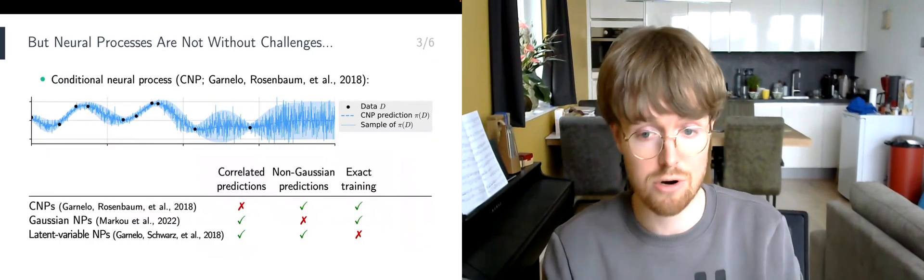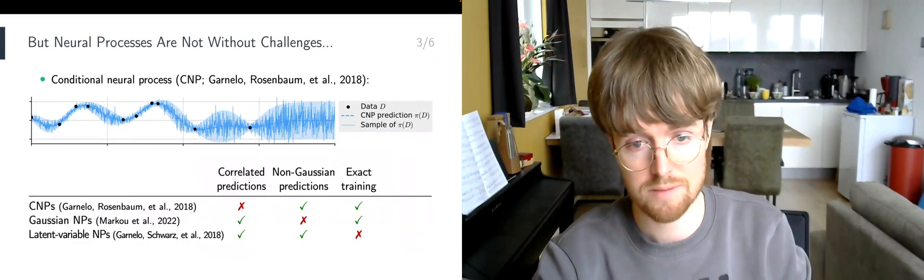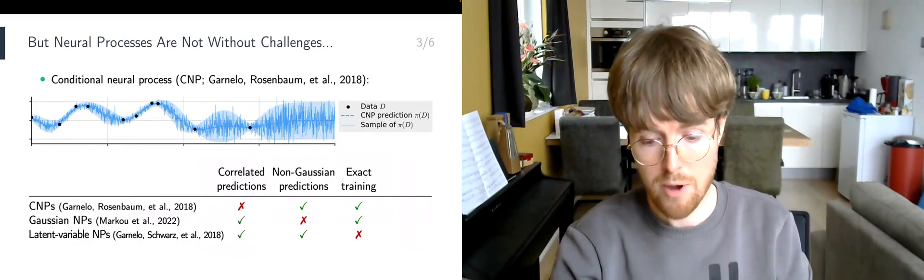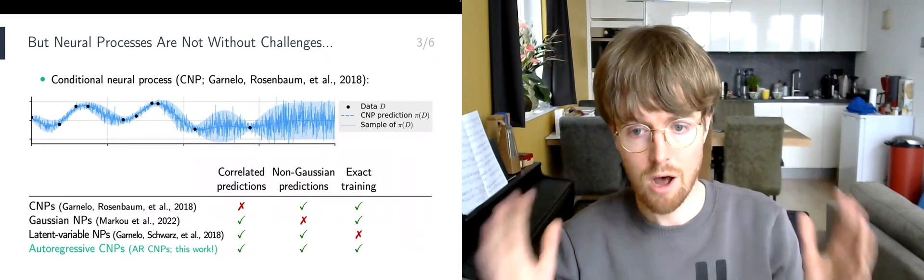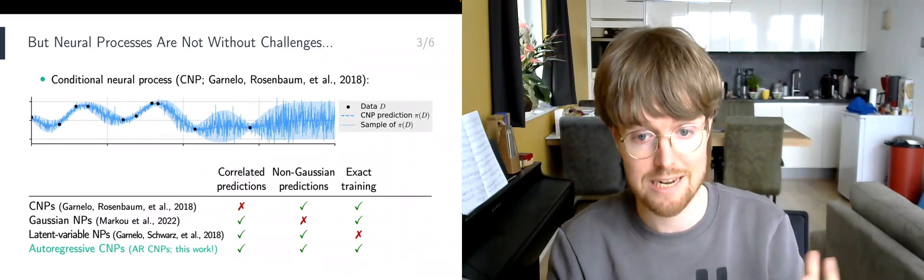Another option is Gaussian neural processes, but these are limited to Gaussian predictions. In this work, we propose another alternative: autoregressive conditional neural processes, abbreviated ARCNPs.